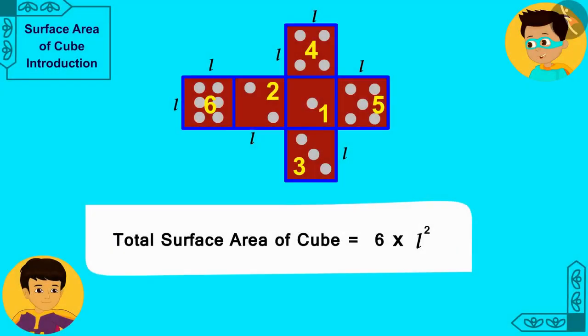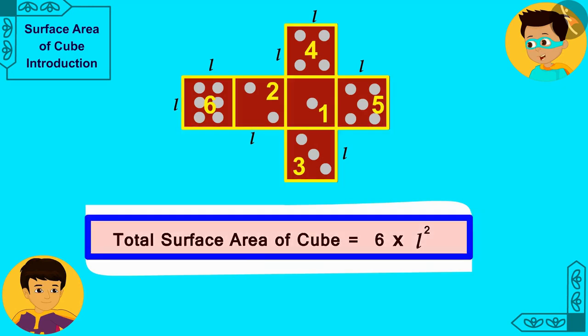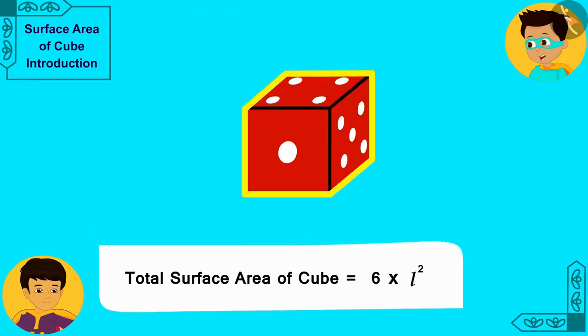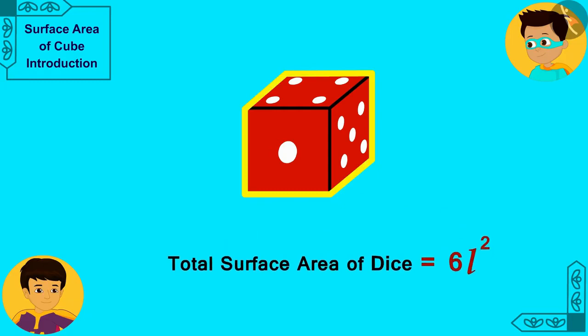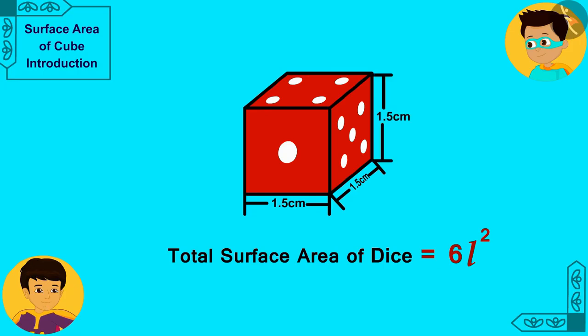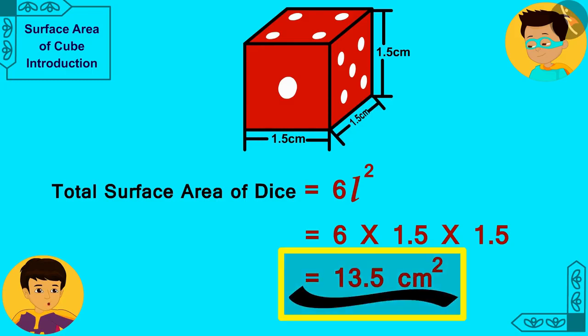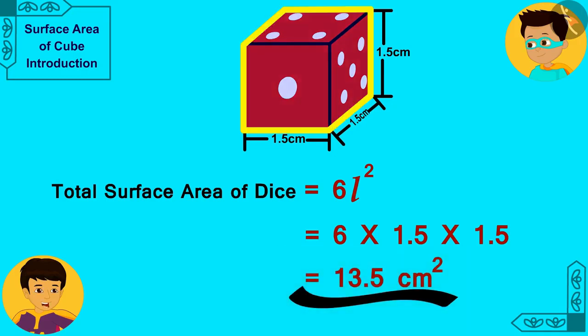Wow! Manas, we found the formula for the total surface area of a cube. Now, let us quickly measure the length of the side of this dice and write it in this formula. Then, we will know the total surface area of this cube. The length of the side of this dice is 1.5 cm. In this way, the total surface area of this cubic dice is 13.5 cm². This means, we will need 13.5 cm² of paper to cover this dice completely.